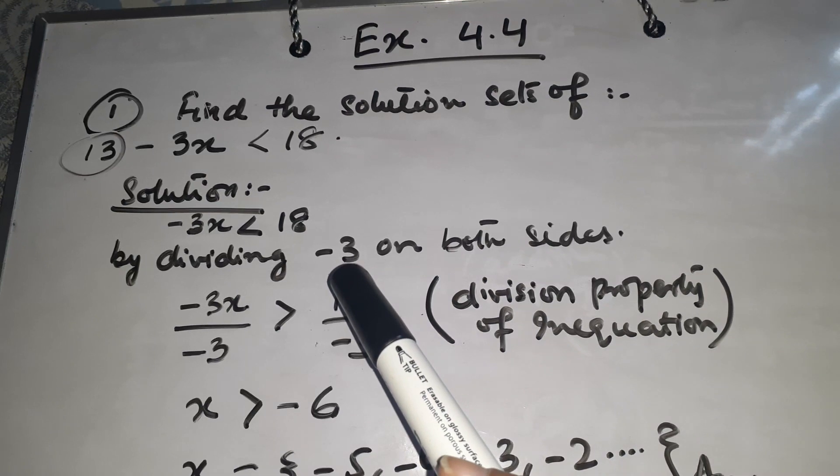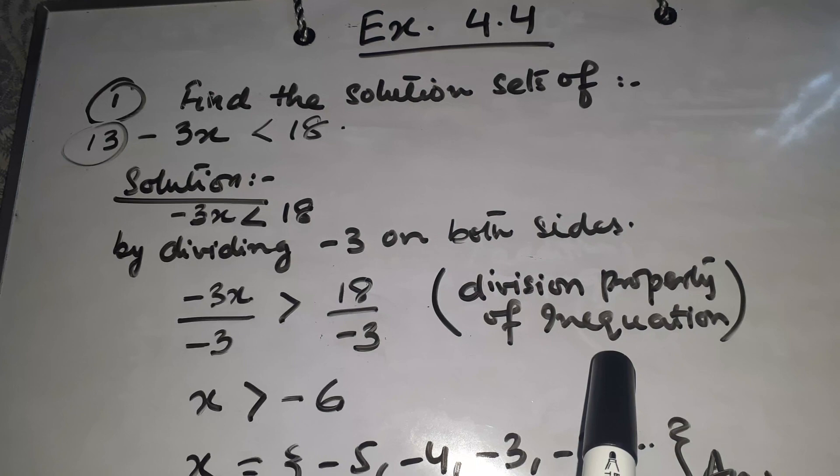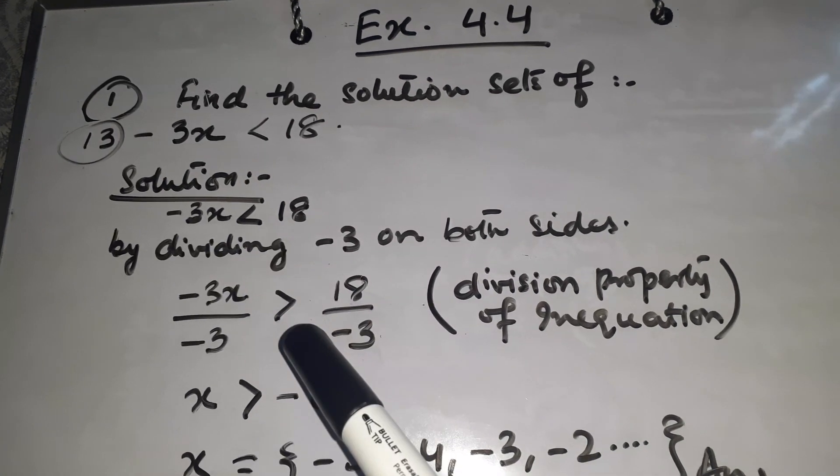Minus 3 is multiplied, so we will divide both sides. Division property of an equation use. But sign of less than will become sign of greater than.